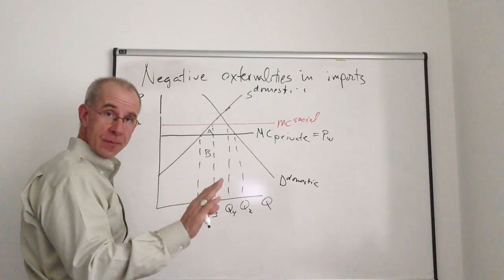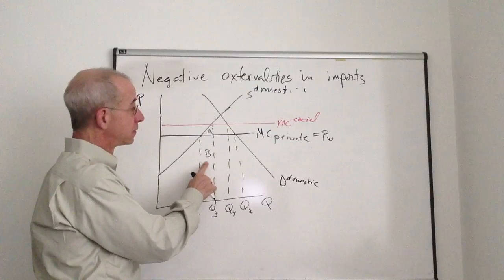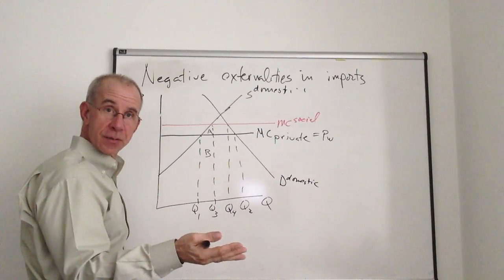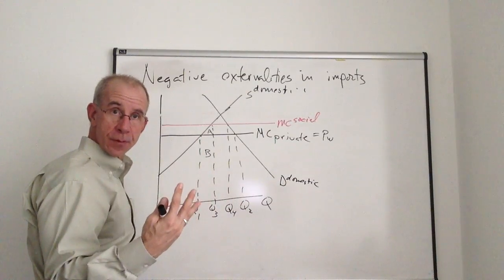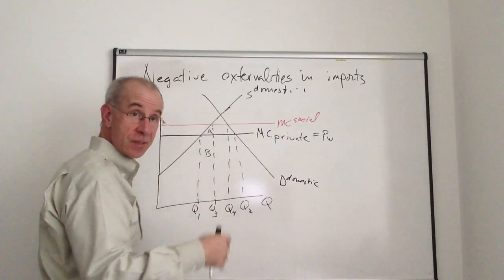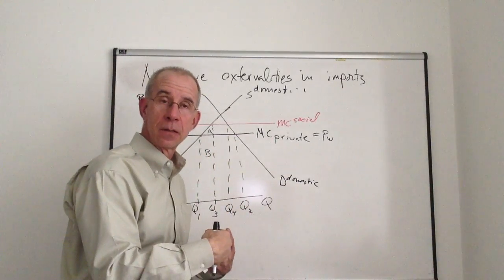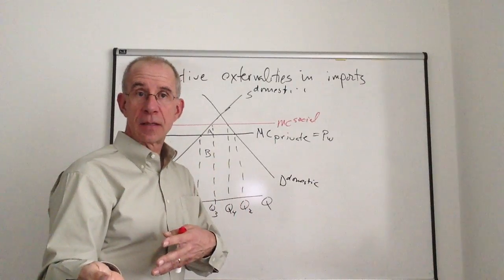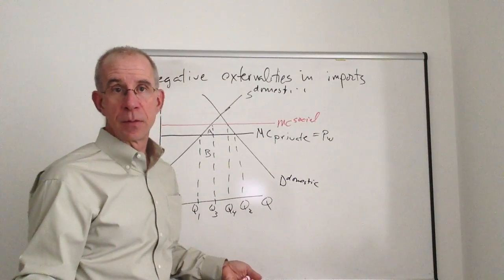In the private market, B, the world price times the quantity, is how much it costs to get this from foreigners. That's what you have to pay on the international market. So the domestic firm says, it costs me more to make than it would cost to get this from imports. I'm not going to do this.